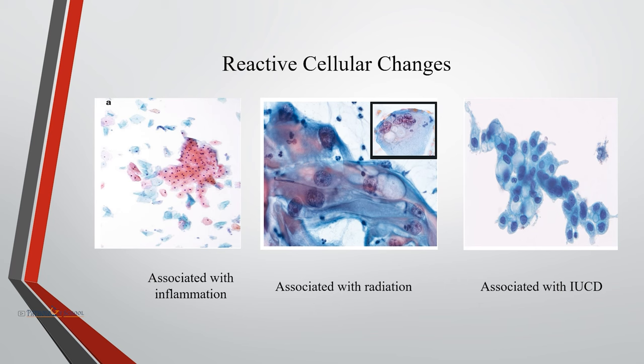Large vacuoles create a signet ring-like appearance, and they can have nuclei. Sometimes these are associated with Actinomyces infection.